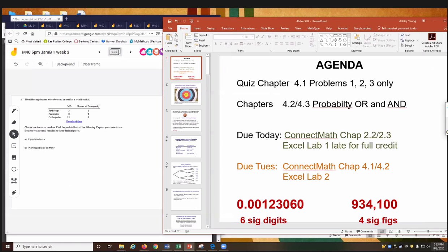Welcome to today. We're working on our quiz today, and then we're going to go through chapters 4.2, probably not 4.3. We'll probably get to AND. We have due today ConnectMath 2.2, 2.3, also Excel Lab 1 is late, but you can still get it for full credit today. Remember, it was due last Tuesday. However, you can turn it in today late but you'll still get full credit. Due Tuesday you have ConnectMath chapters 4.1, 4.2 due, and also Excel Lab 2 is due as well.